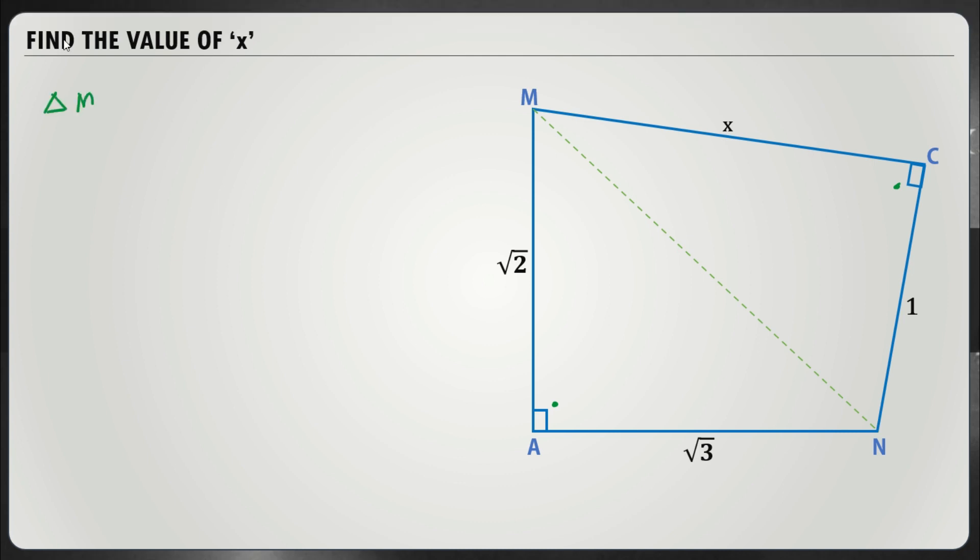If I take triangle MAN, in that triangle, √2 squared plus √3 squared should give me MN squared. That's right.